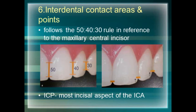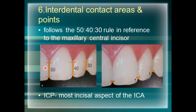The next component is interdental contact areas and points. The interdental or interproximal contact area is the broad zone in which two adjacent teeth contact. The maxillary central incisor follows the 50-40-30 rule for interdental contact area. The broadest contact is between the two central incisors and the shortest is between the lateral and the canine. This broad zone gives an illusion of longer teeth to the central incisor.